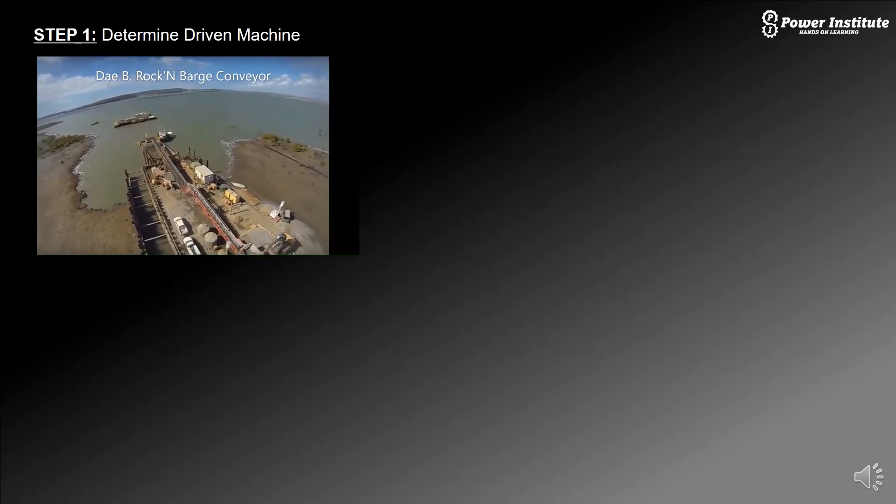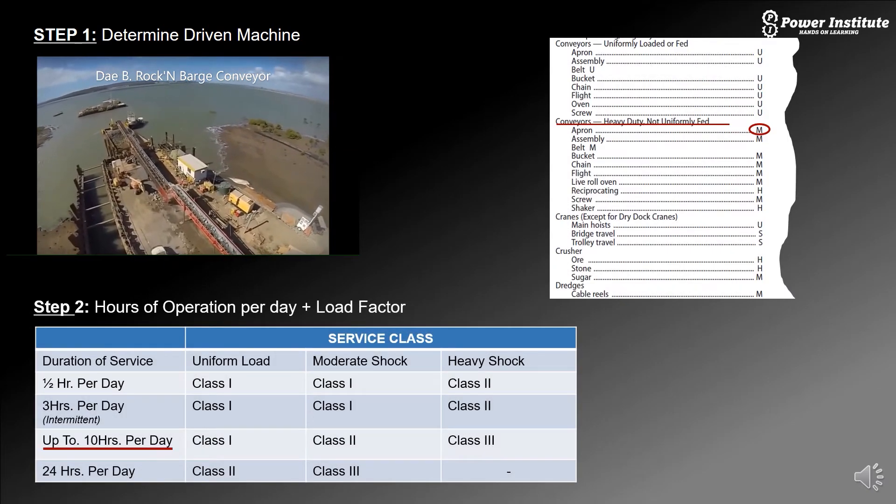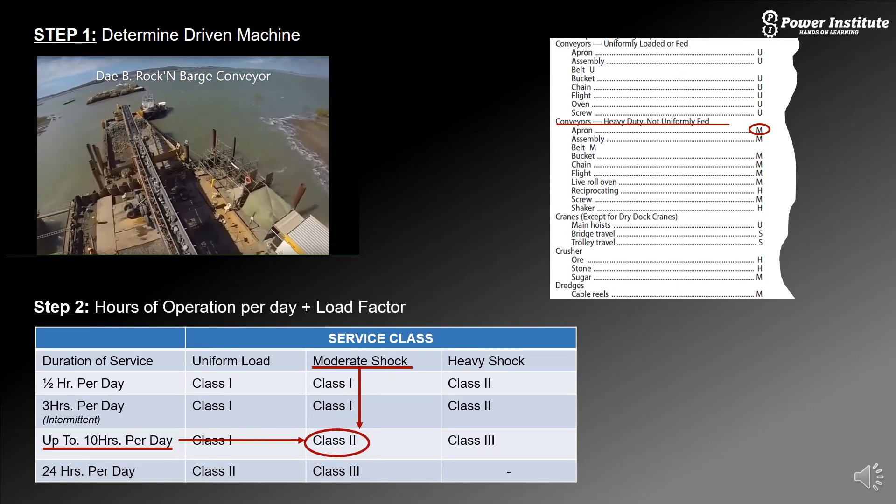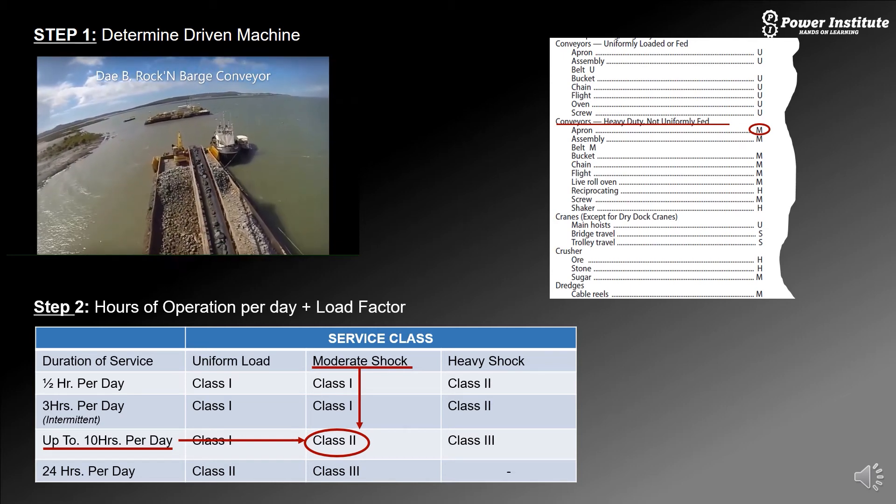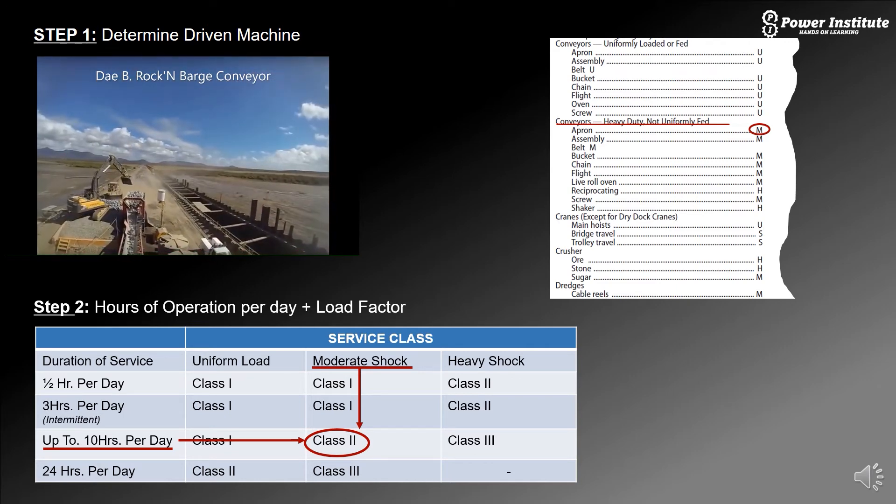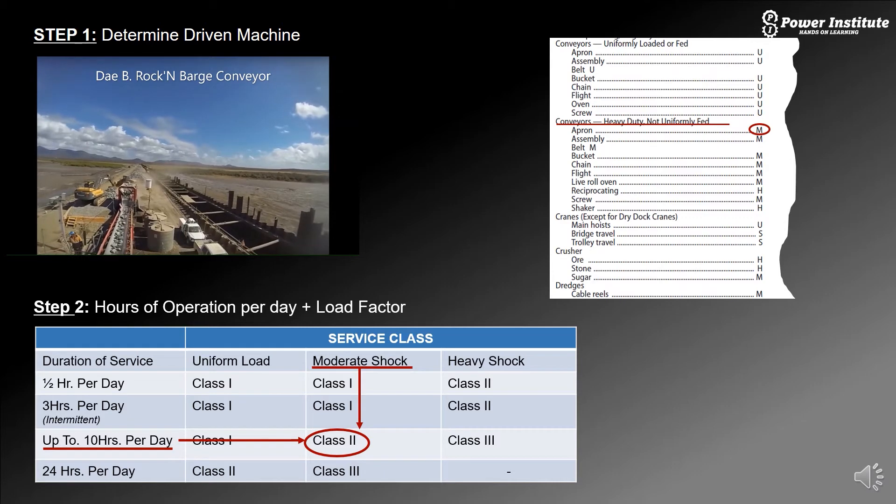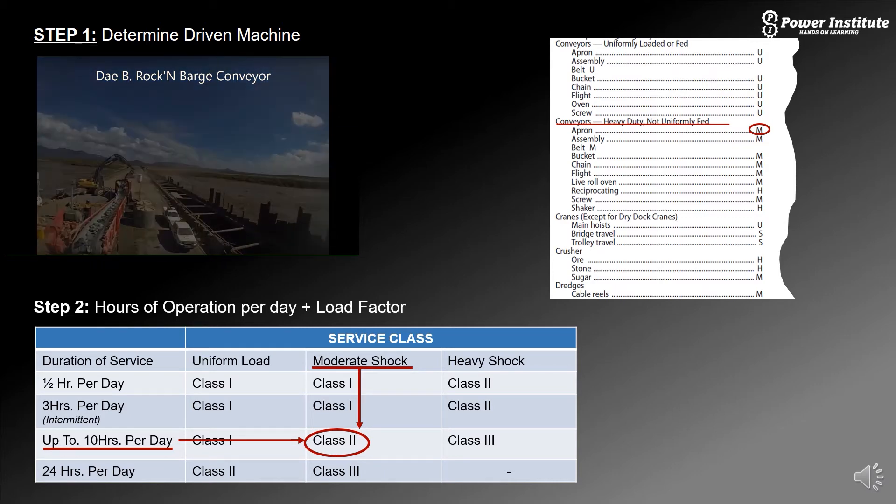So to determine the driven machine: we know it's a barge conveyor. It's a moderately loaded conveyor based on the application chart. These charts are available in our catalogs. It's uniform, heavy duty because it's moving heavy rocks, but it's uniformly loaded. A little bit of a moderate shock because of the size. So with the 10 hours a day that he told us, that puts us at a class two service.